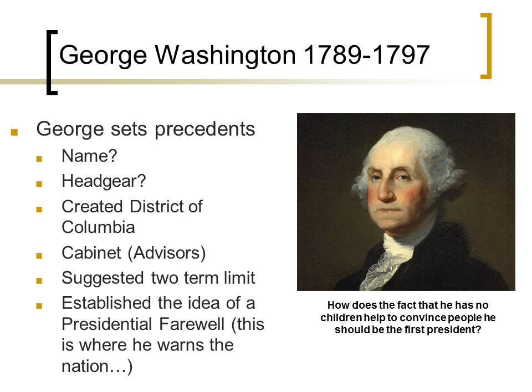Washington also came up with the idea of creating a separate place for our capital. He didn't want the capital to be in any one state, since it might suggest that state had more power than the others. Rather than giving it to Maryland or Virginia, he created the District of Columbia. He also realized that ruling by himself might be misinterpreted as trying to be an absolute ruler, so he created the cabinet — a set of advisors to help guide him.